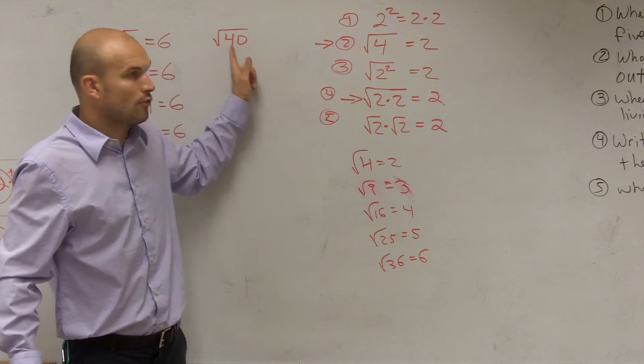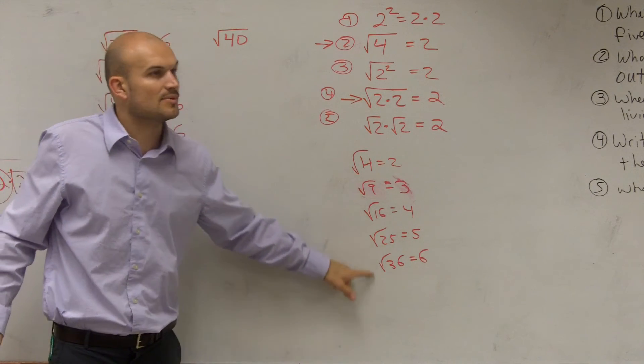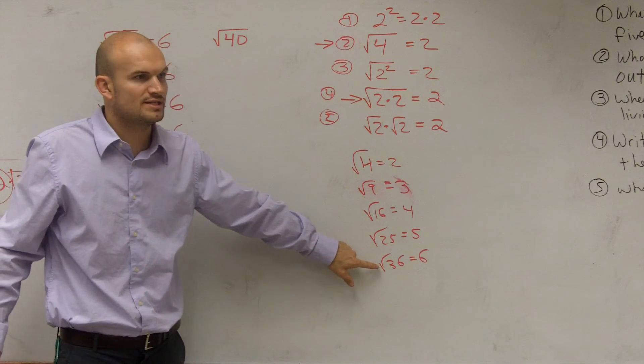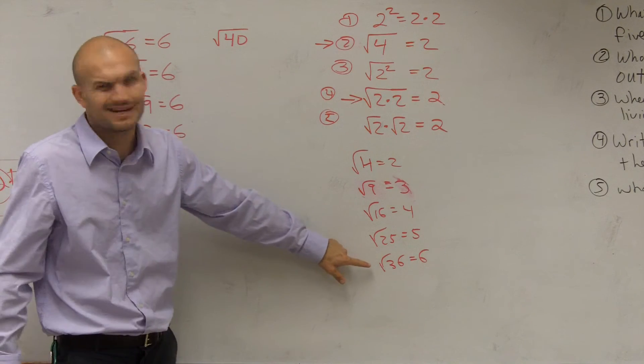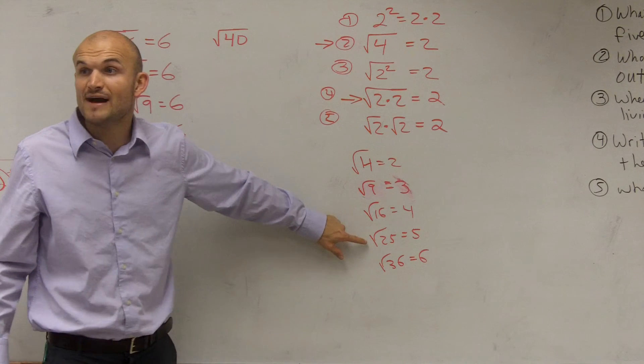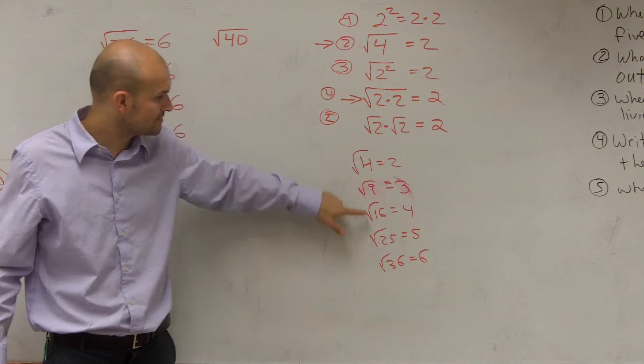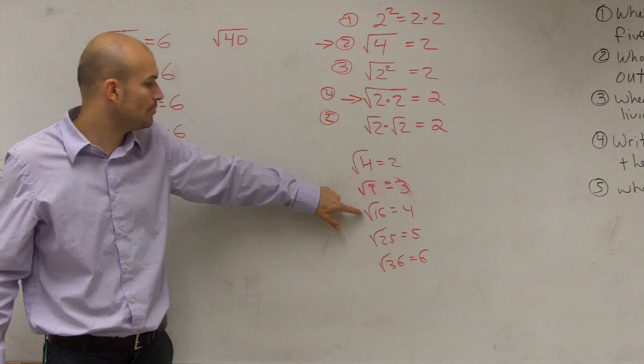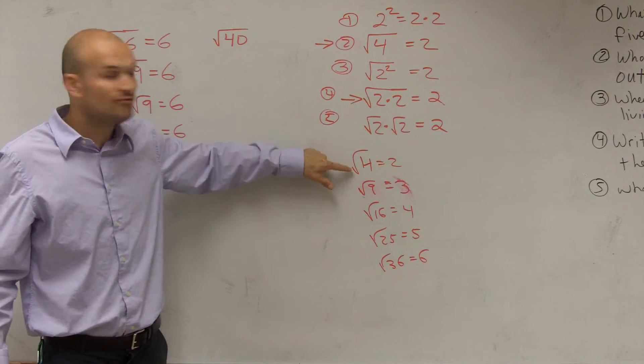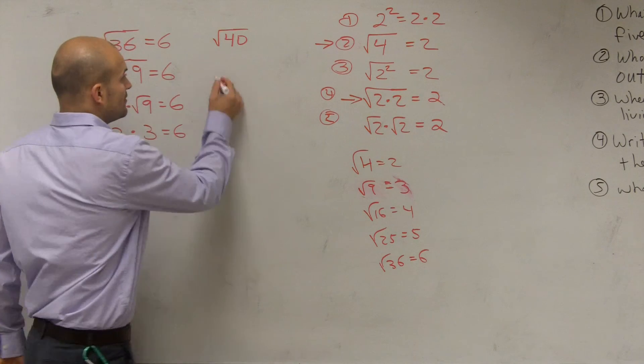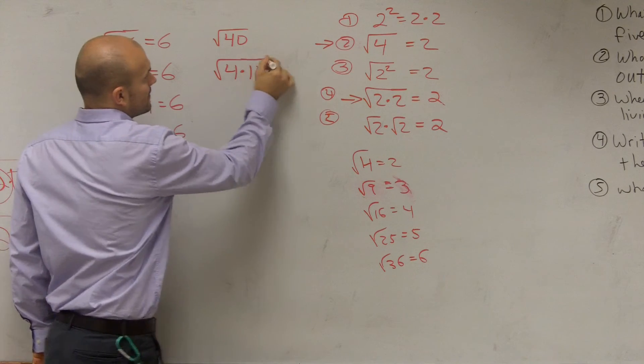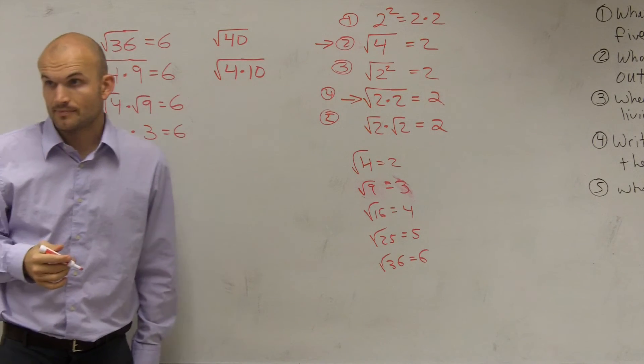What could you rewrite 40 as a multiple of one of these numbers? Is there any of these numbers? Can you write it as a multiple of 36? Yes. 36 times what gives you 40? No, I can't do it. 4. 25. 25 times what gives you 40? 16 times something? No. 9? No. 4. We can rewrite it as square root of 4 times 10. Right? Yeah.